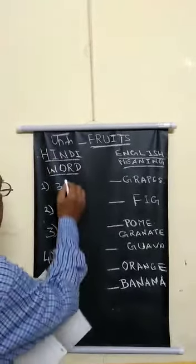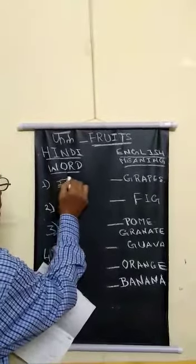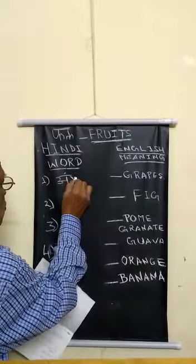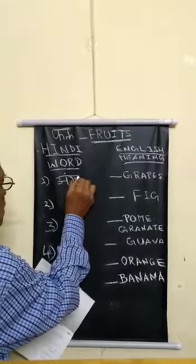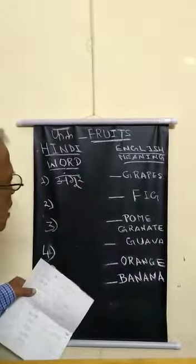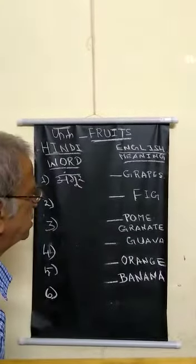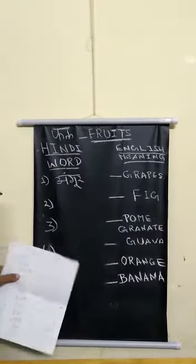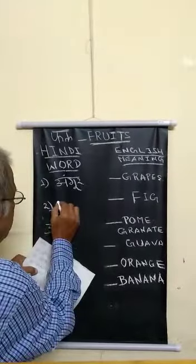First is Angur. A, Gu, Ra — Angur. Angur means grapes.